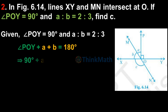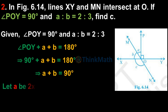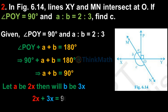Angle POY plus A plus B equal to 180°. So 90° plus A plus B equal to 180°, therefore A plus B equal to 90°. Let A equal to 2X and B equal to 3X since A : B equal to 2 : 3. So 2X plus 3X equal to 90°, which gives 5X equal to 90°, therefore X equal to 18°.